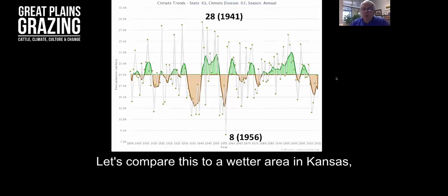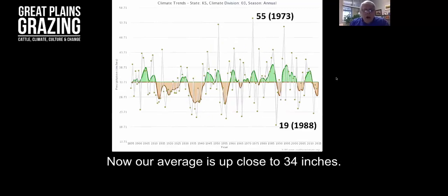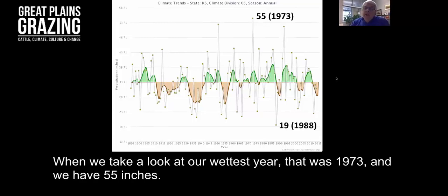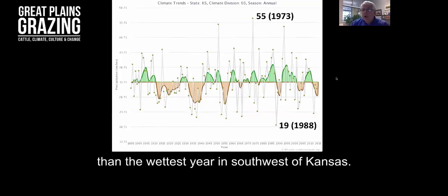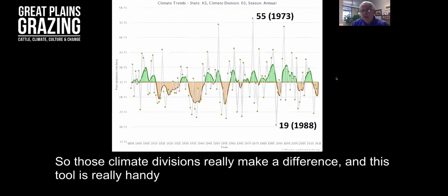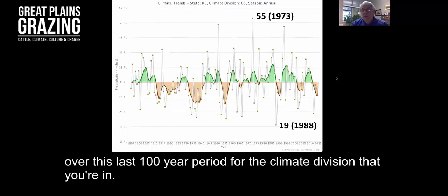Let's compare this to a wetter area in Kansas. This would be for the northeast climate division. Now our average is up close to 34 inches. When we take a look at our wettest year that was 1973 and we have 55 inches. Our driest was 19 inches in 1988. If we look at the northeast, the driest year was only nine inches less of moisture than the wettest year in the southwest in Kansas. So those climate divisions really make a difference. This tool is really handy for drilling down and seeing what the climate is like over this last hundred year period for the climate division that you're in.